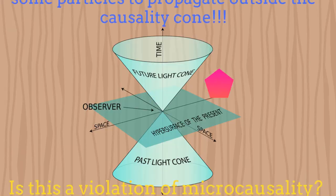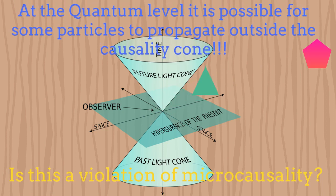At the quantum level, it is quite normal to have particles able to propagate outside the cone of causality. But wait a minute, does this represent a violation of microcausality?